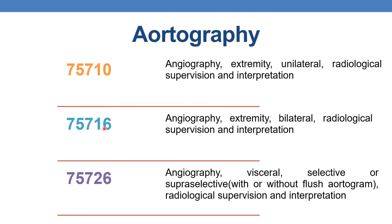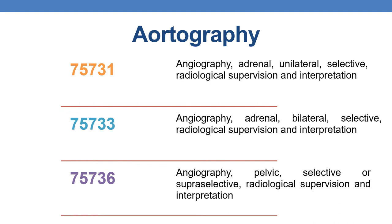Next, 75716 — angiography, extremity, bilateral, radiological supervision and interpretation. Next, 75726 — angiography, visceral, selective or supra-selective, that is with or without flush aortogram, radiological supervision and interpretation. Next, 75731 — angiography, adrenal, unilateral, selective, radiological supervision and interpretation.